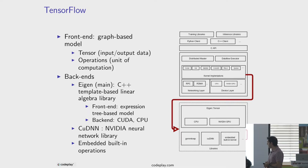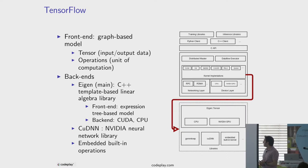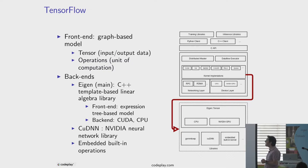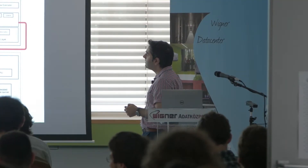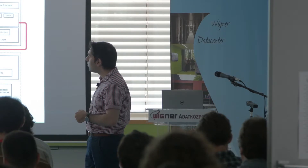The front-end of TensorFlow is a graph-based model. As the name suggests, it uses tensors as input and output data, and there are units of computation called operations. In the back-end, they support different architectures. The front part of the architecture is the client code — it can be Python or C++. On top of that you can use existing training or inference libraries, and there is a C API level which creates a unified view for the core backend of TensorFlow.